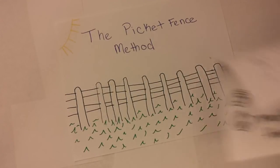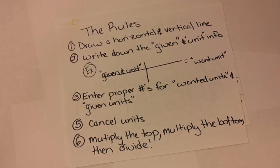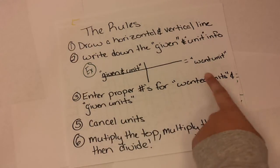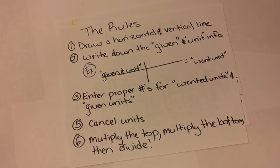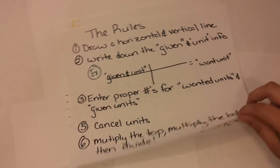There are a couple rules to know when you're learning the picket fence method. First, you're going to draw a horizontal and a vertical line. Then you're going to write down the given and unit information. For example, as I have here, you're going to enter the proper numbers for wanted units and given units. You're going to cancel the units out, and then you're going to multiply the top, multiply the bottom, and divide the two, and I'm going to show you how real quick.